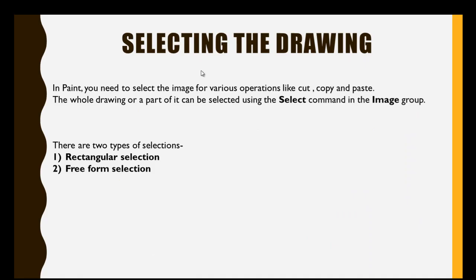Students, in the previous part we read about the different tabs and groups of Paint software and the detailed information about their working. Now in this part, we will just discuss about the selection tools, which is very important for various operations like cut, copy and paste.